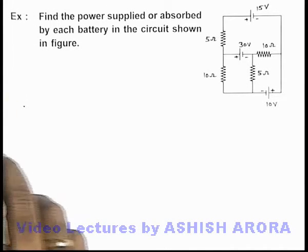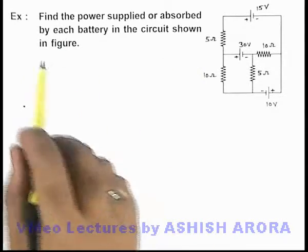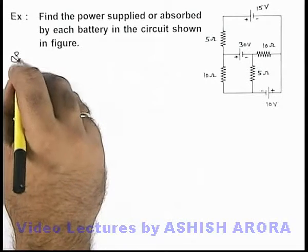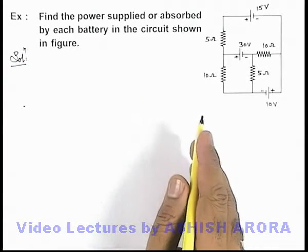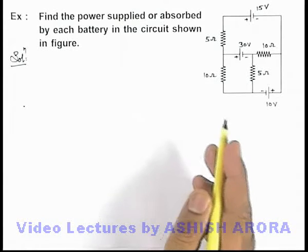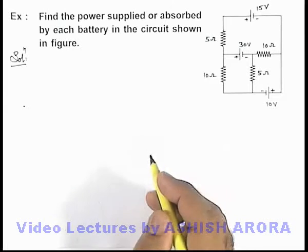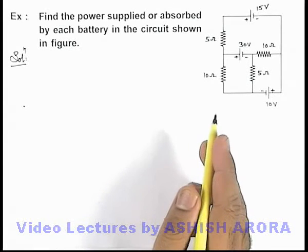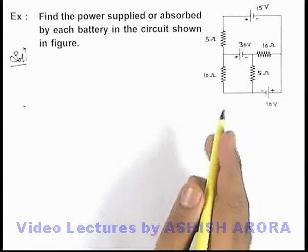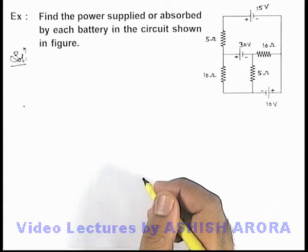In this example we are required to find the power supplied or absorbed by each battery in the circuit shown in the figure. To find the power absorbed or supplied by any battery, we need to calculate the current through each battery. We know that power supplied or absorbed by the battery can be written as the product of EMF and current through it. To calculate the current, we use Kirchhoff's Current Law, however we can solve the problem by using Kirchhoff's Voltage Law also.